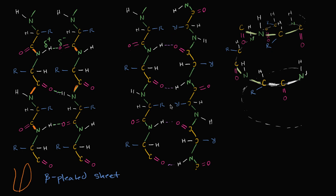Over here I've also constructed a beta-pleated sheet, but you might notice the difference. This one went from the nitrogen to the alpha carbon to the carbonyl carbon — nitrogen, alpha carbon, carbonyl carbon — and this one was also going in the same direction: nitrogen, alpha carbon, carbonyl carbon. So this is a parallel beta-pleated sheet. Both of these backbones that are interacting are going in the same direction.